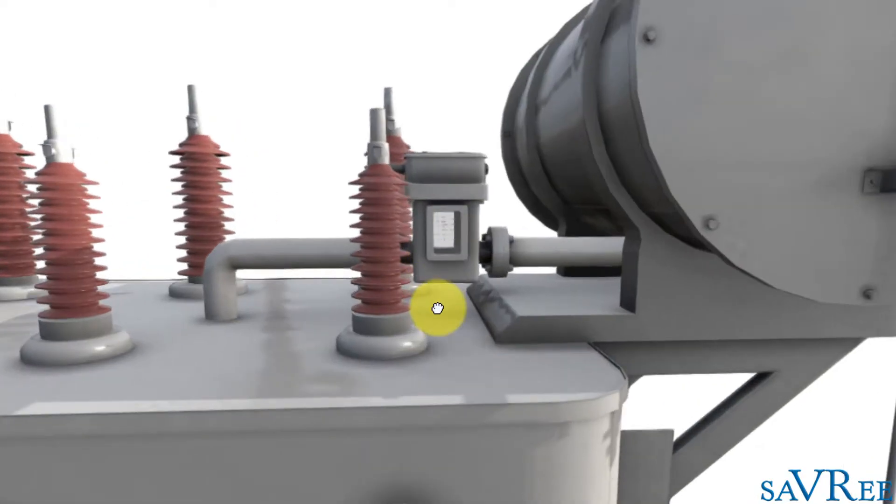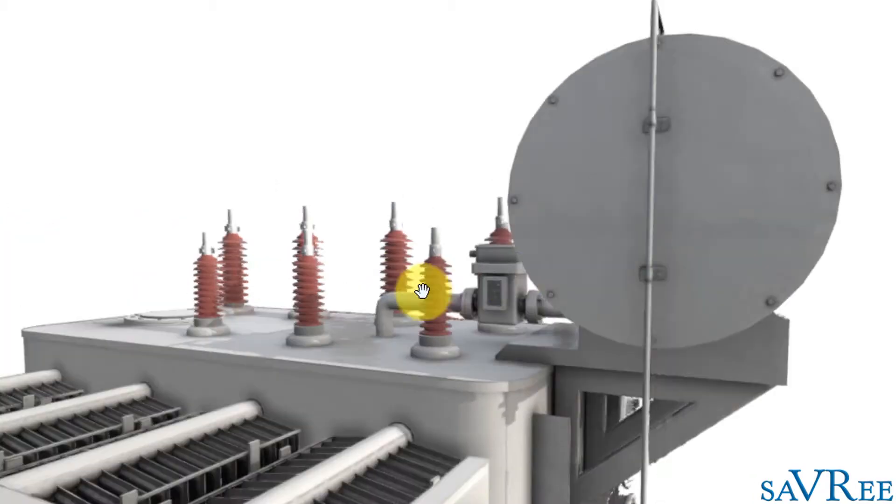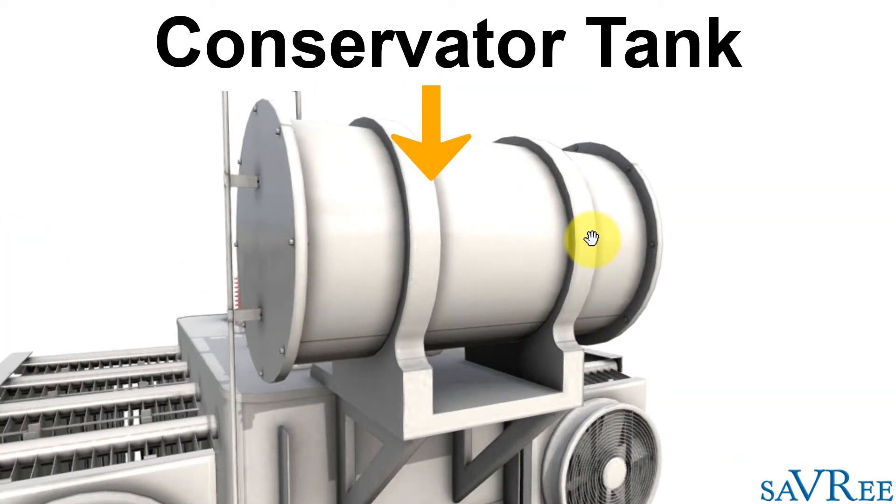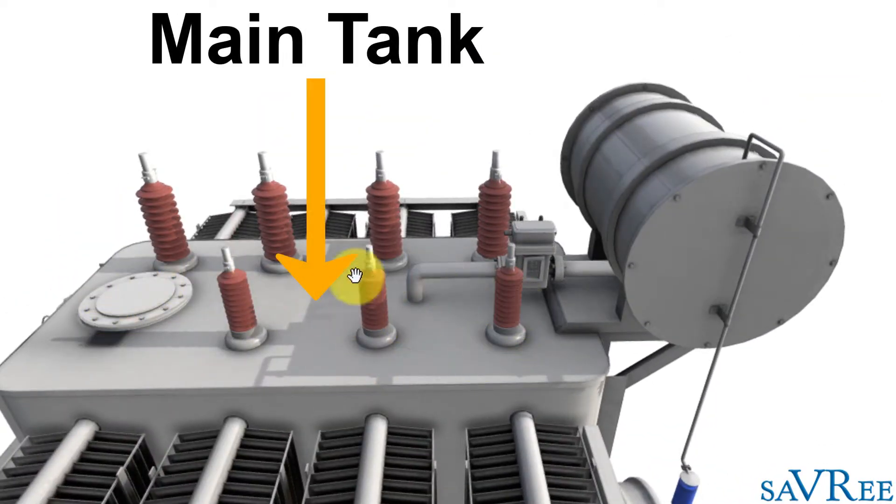The type of liquid insulated transformer that it's fitted on is called a conservator type. The conservator can be seen here on the right hand side, now in the middle, that's this tank here. And the main tank is this tank here.